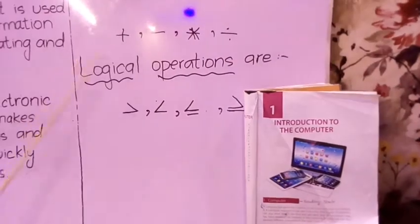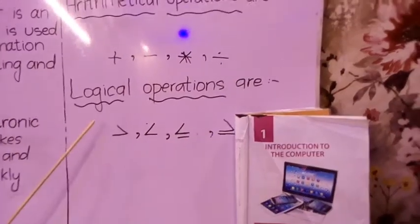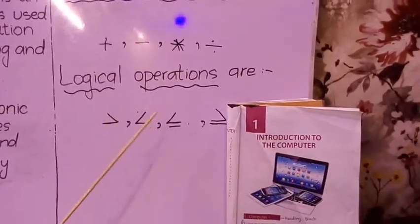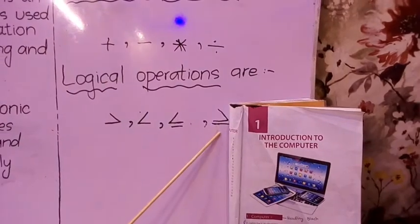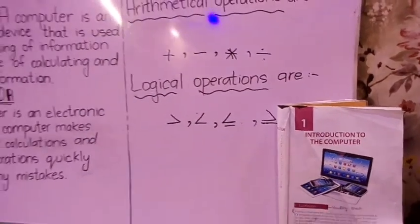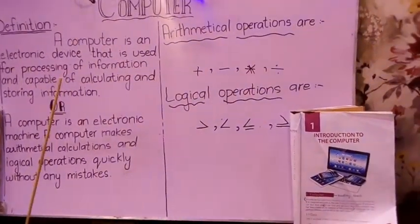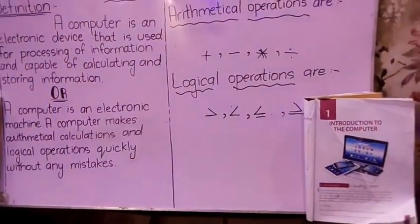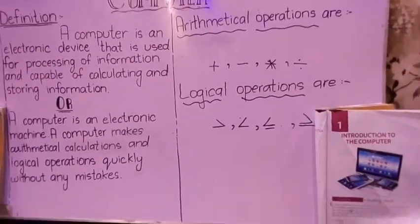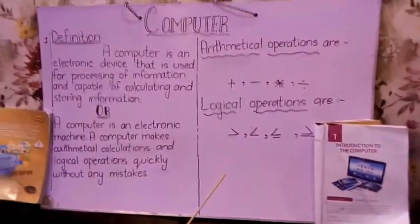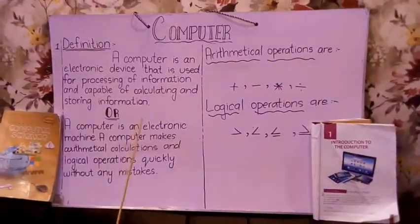A computer makes mathematical calculations and logical operations quickly without any mistakes. Arithmetic operations are addition, subtraction, multiplication, and division. Logical operations are greater than, less than, less than or equal to, and greater than or equal to. It has four main parts: CPU, keyboard, monitor, and mouse. These are the parts of a computer.